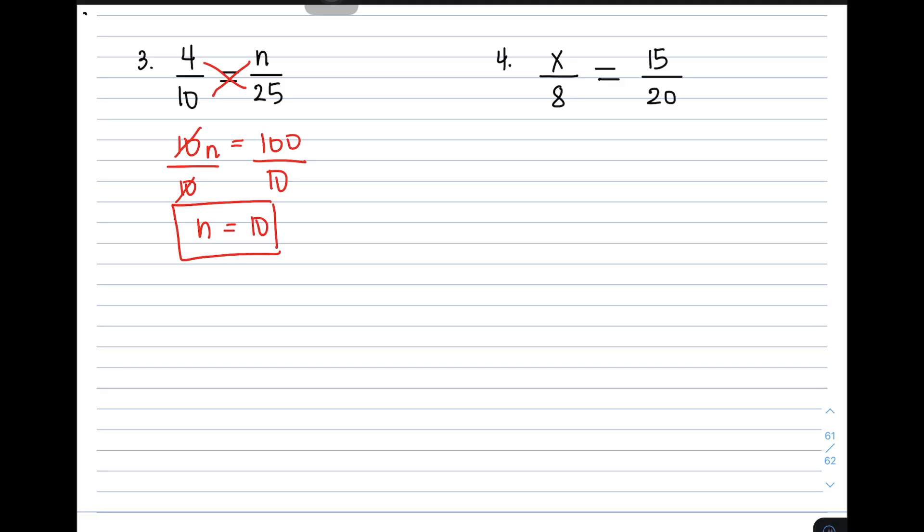So the missing variable here is the variable x. So by performing cross-multiplication, x times 20, it will give you 20x. Then, 8 times 15, it will give you 120.